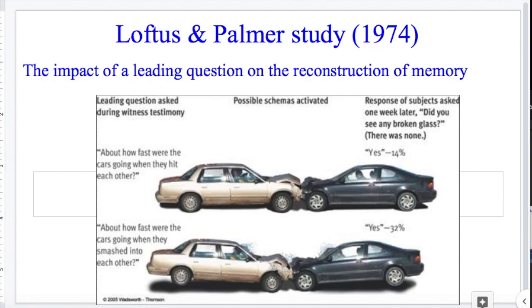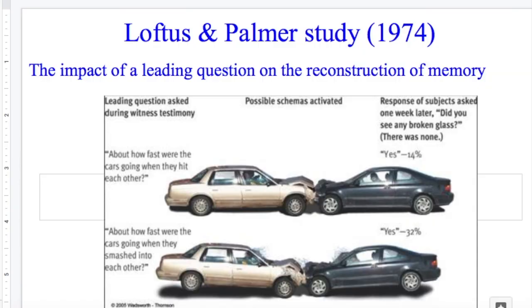In the Loftus and Palmer study, participants were shown a video similar to a car collision. In the video there was no broken glass shown in the aftermath of the collision. Importantly, this was a two-stage experiment: in stage one, participants were split into different groups and had varying leading questions asked about the speed the cars were traveling when they either 'collided,' 'hit,' or 'smashed.' Then a week later they were asked a follow-up question: 'Did you see any broken glass?' The participants who were asked the original leading question using the word 'smashed' were more than twice as likely to have a false memory of seeing broken glass than those simply asked how fast they were going when they 'hit' each other.